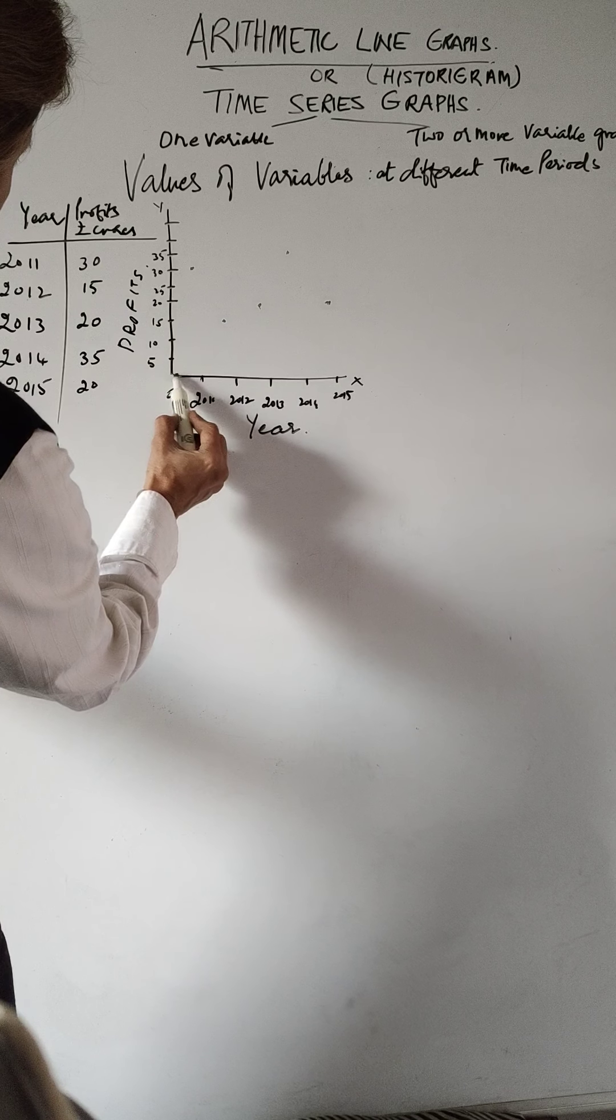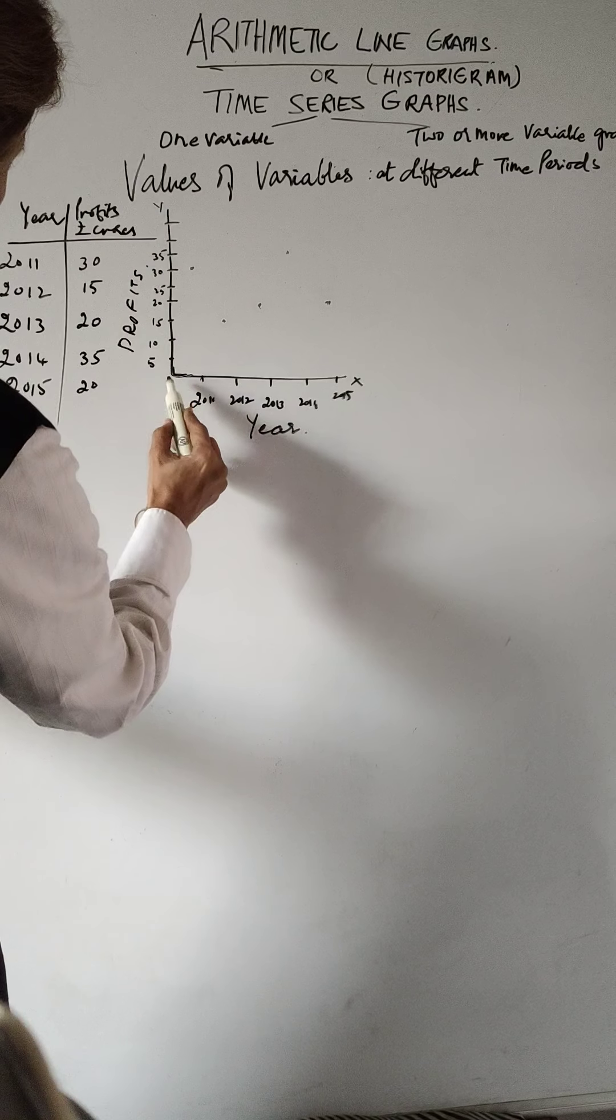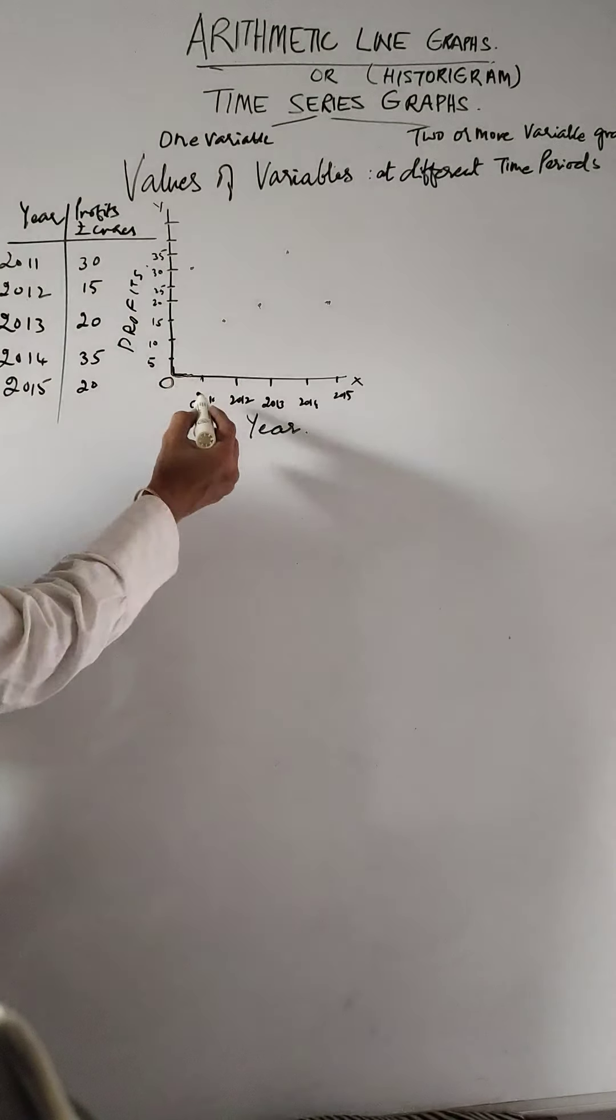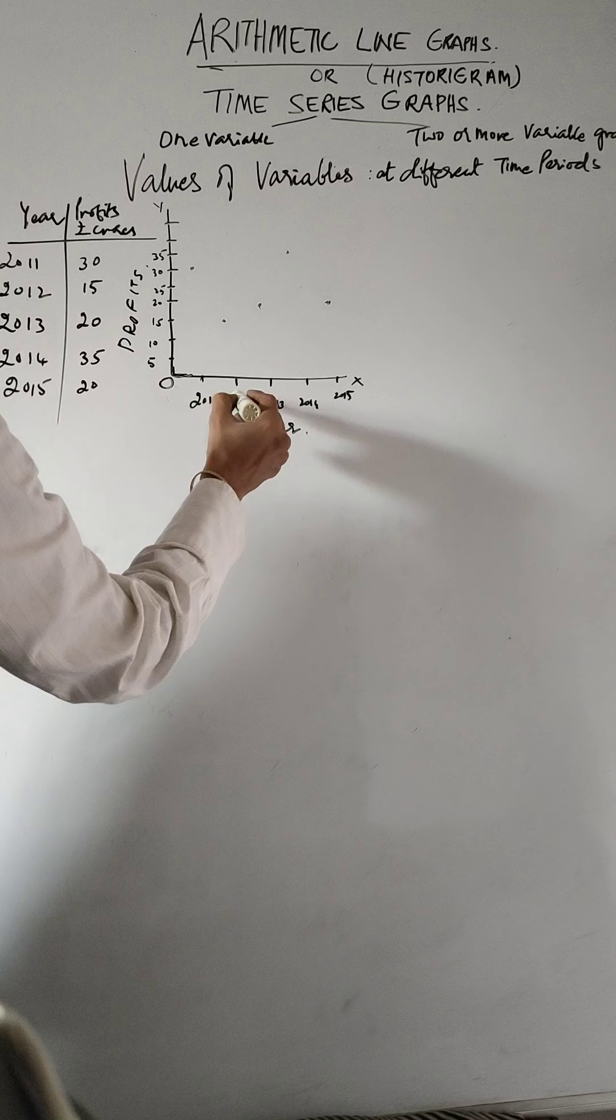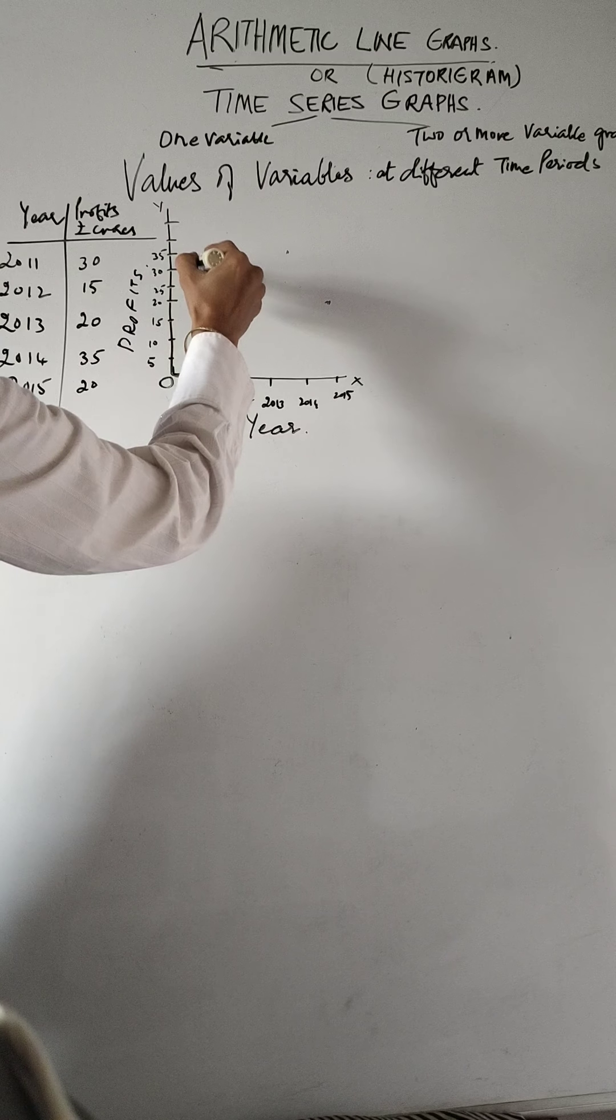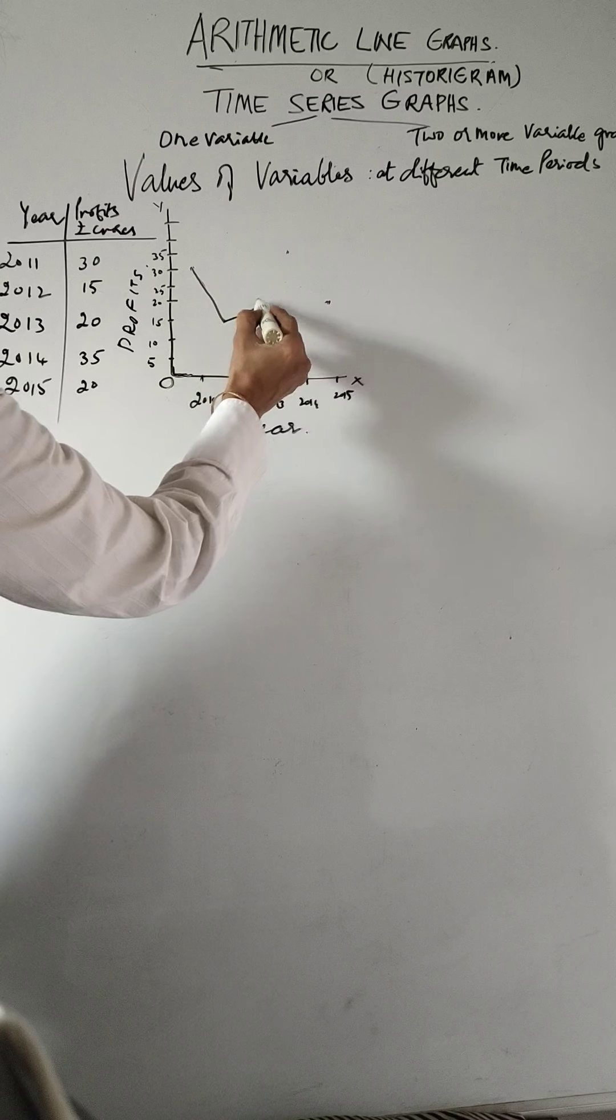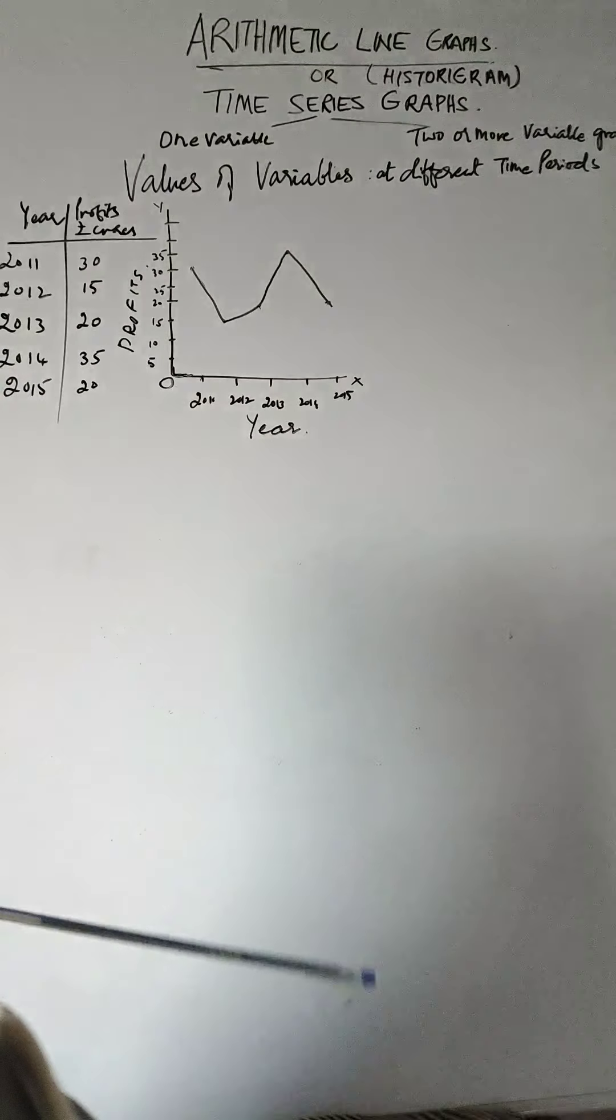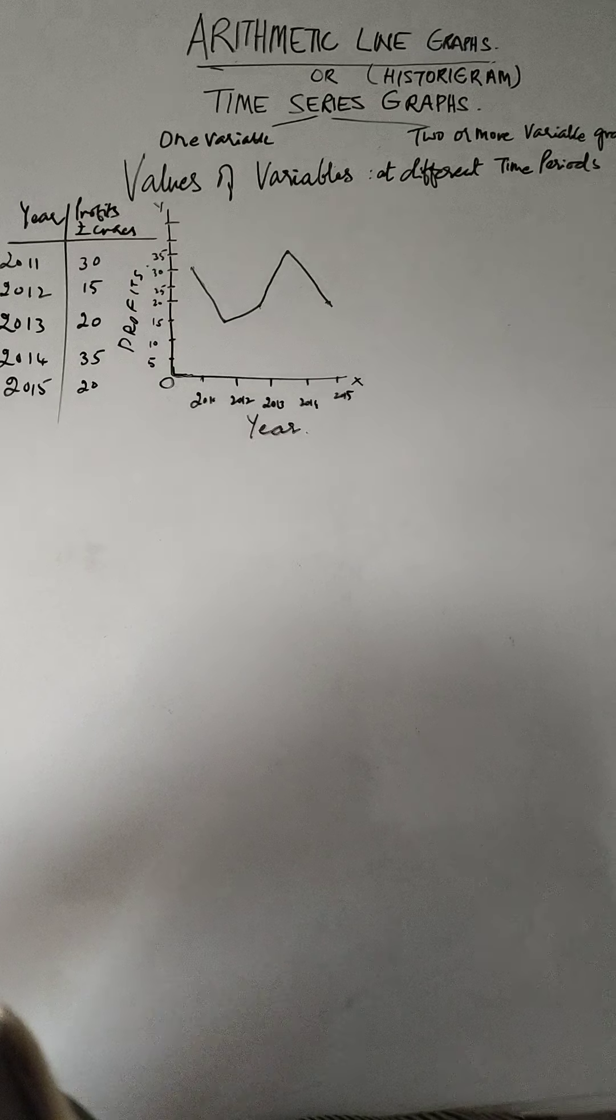Now again, look at this. It's not connected. You've got to connect it properly. This is how it's going to be. This is the origin, zero. Now you see, 2011 the profits were 30 rupees 30 crores, so I put a mark here. In 2012 it was 15, profits have come down, so then I put a dot. Put the dots for various years and then connect them with a line. That's how it's known as a line graph.